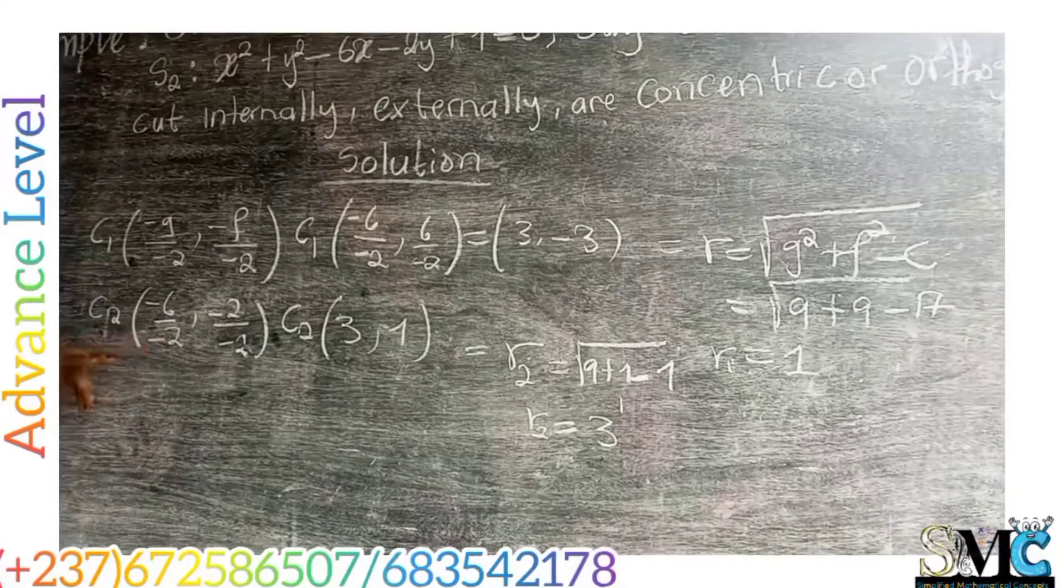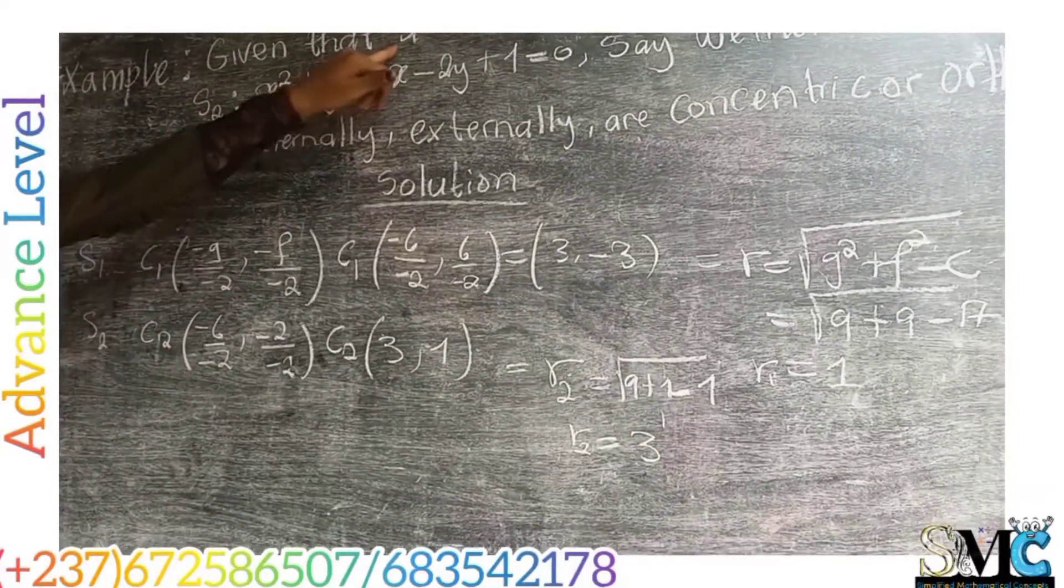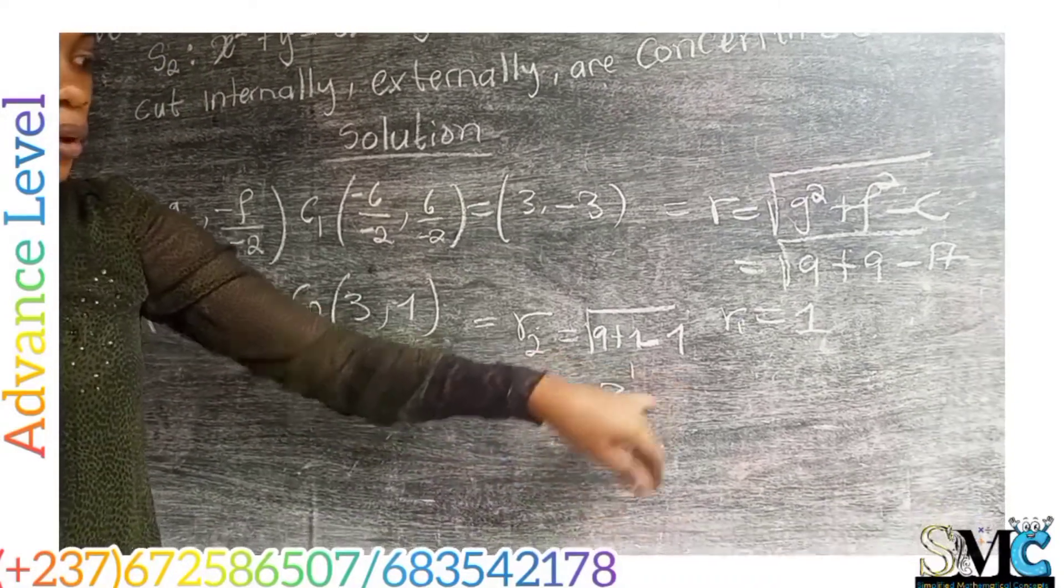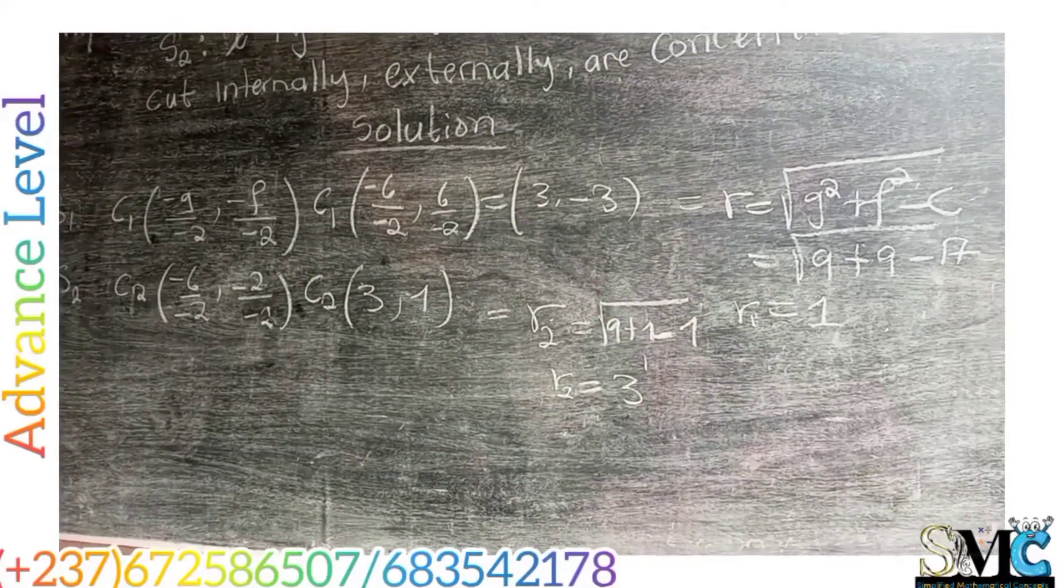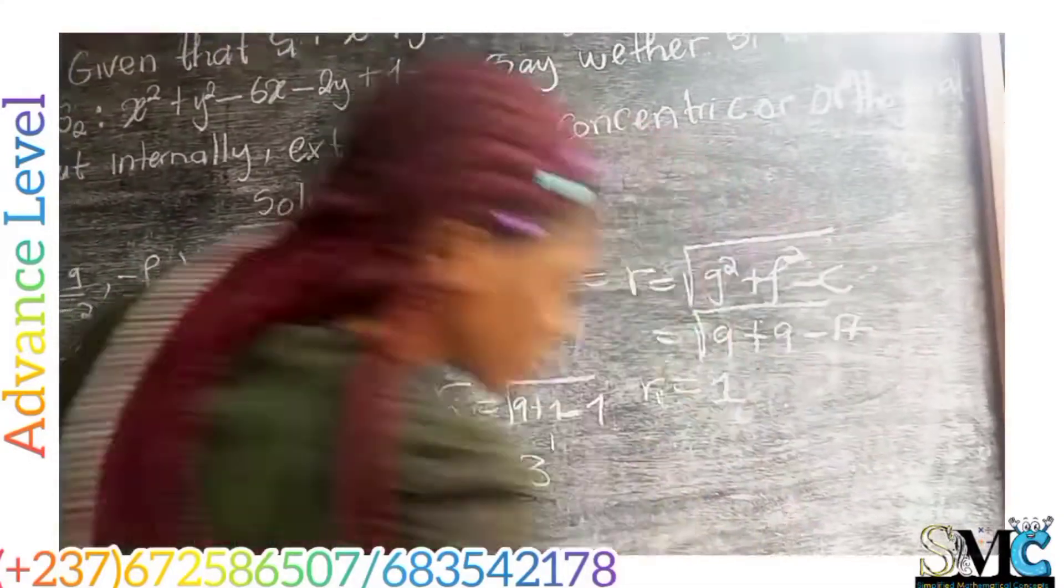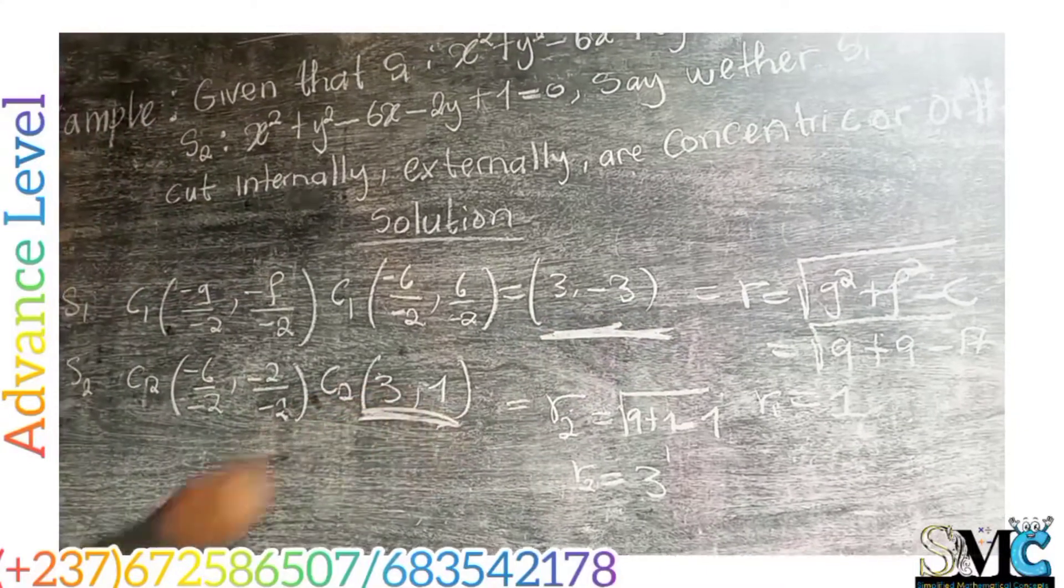Now with this, if the two circles touch internally, then the distance from C1 to C2 must be equal to R1 minus R2, or R2 minus R1, depending on who is bigger. So the first thing we are going to do is to find the distance from C1 to C2. That's the distance between this point and this point.